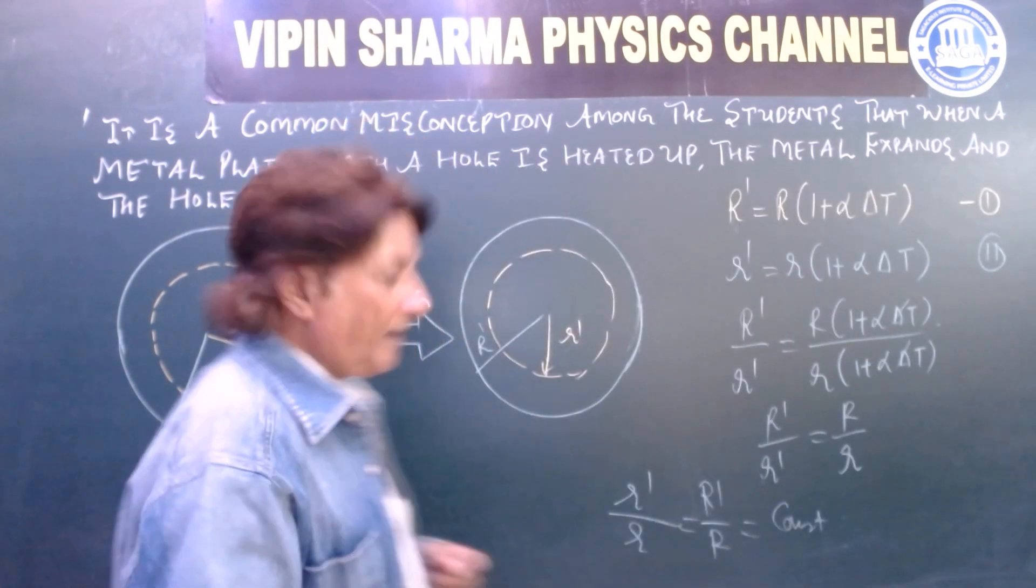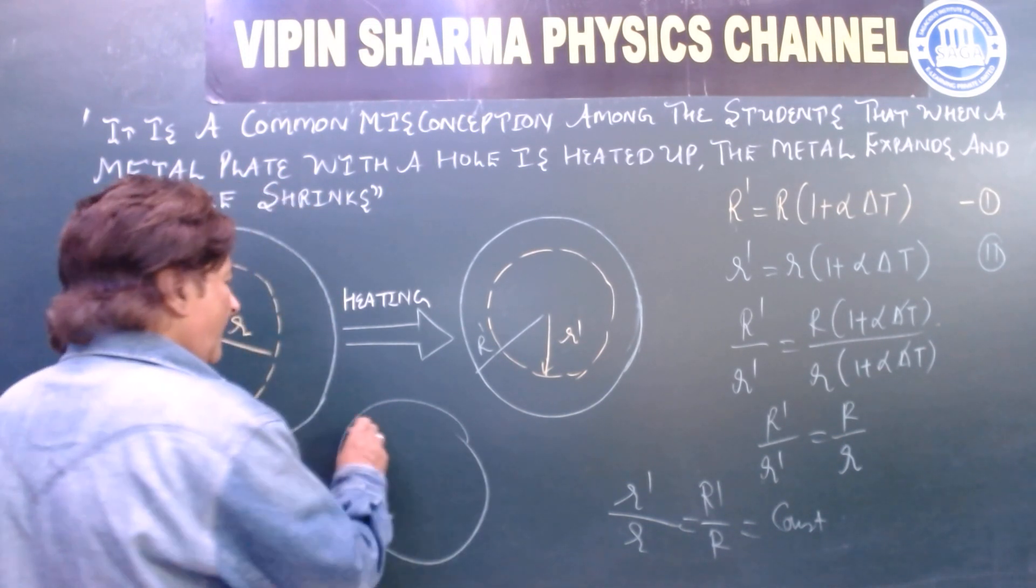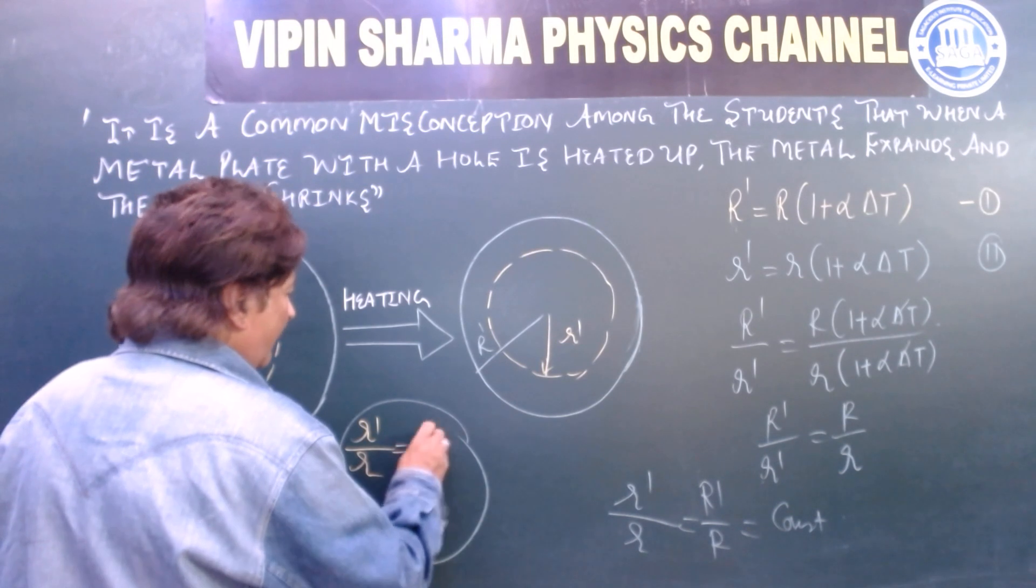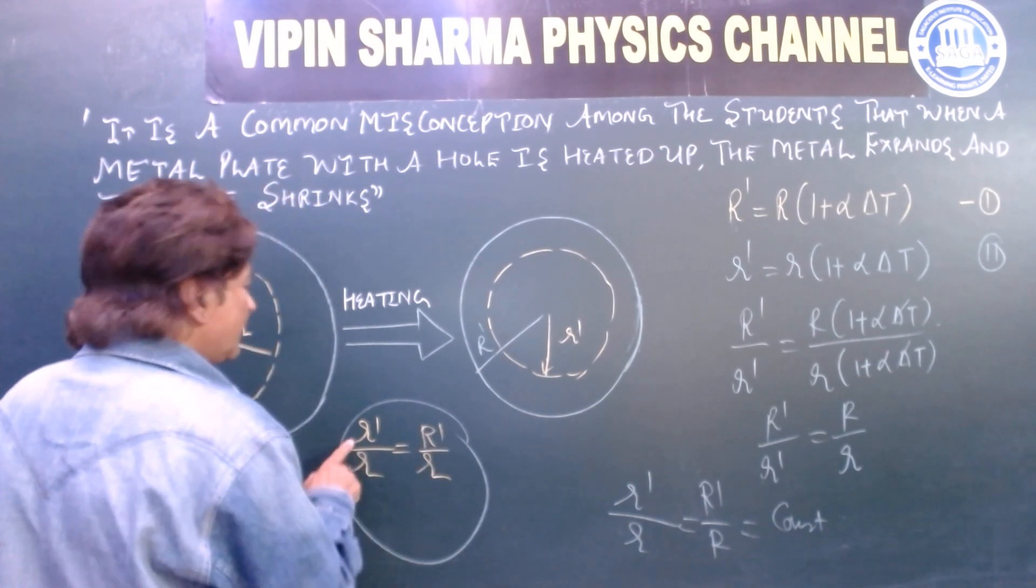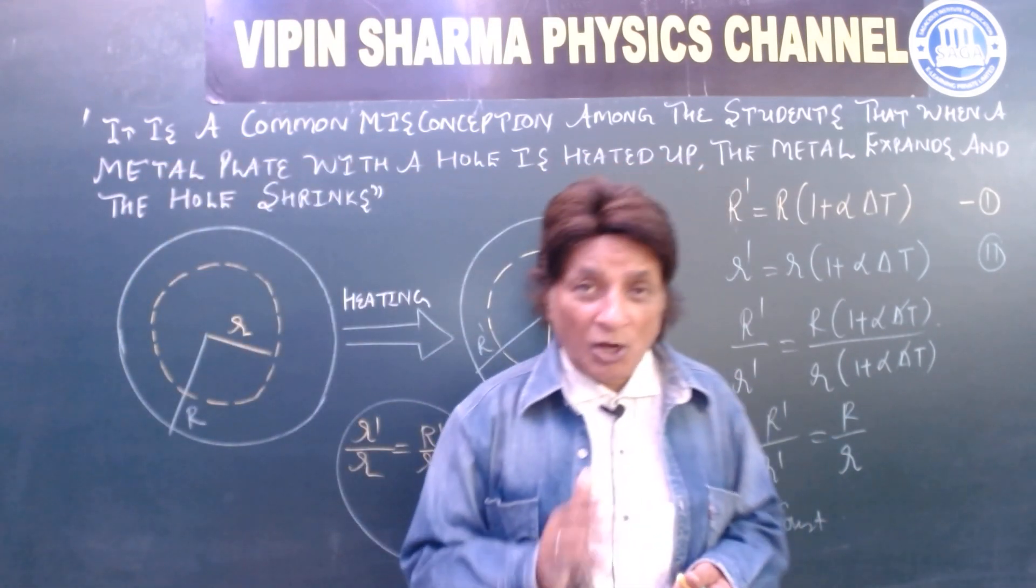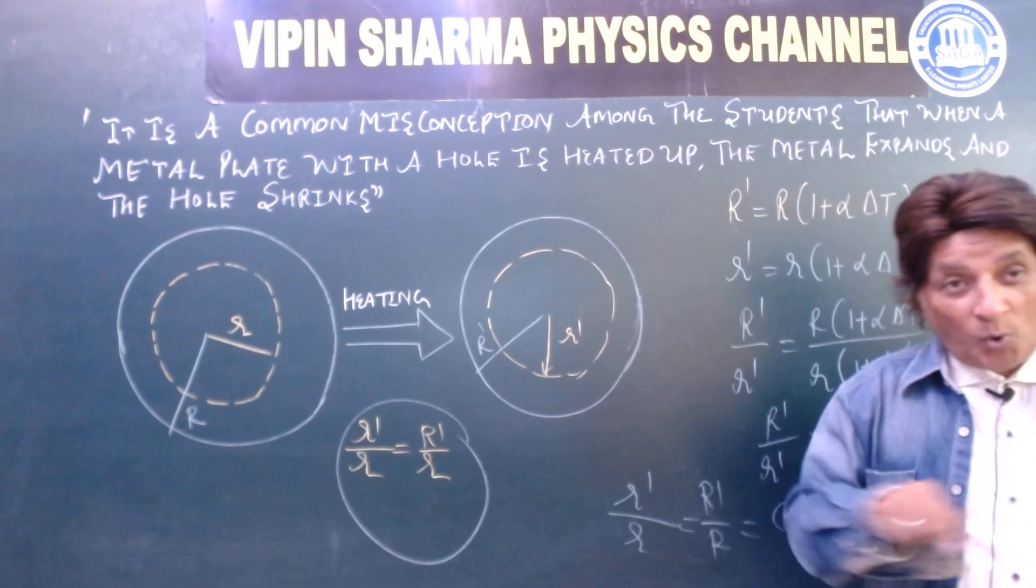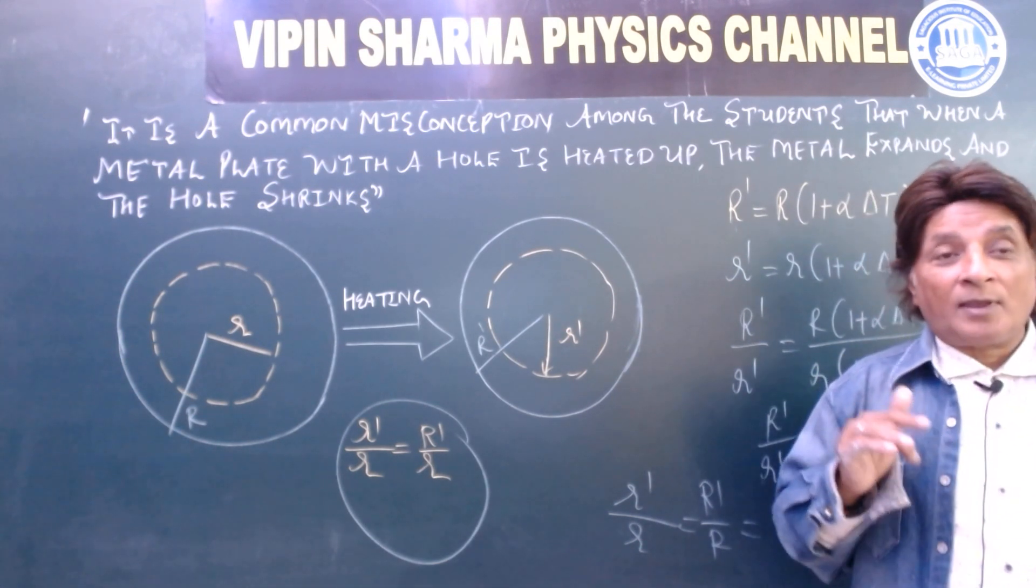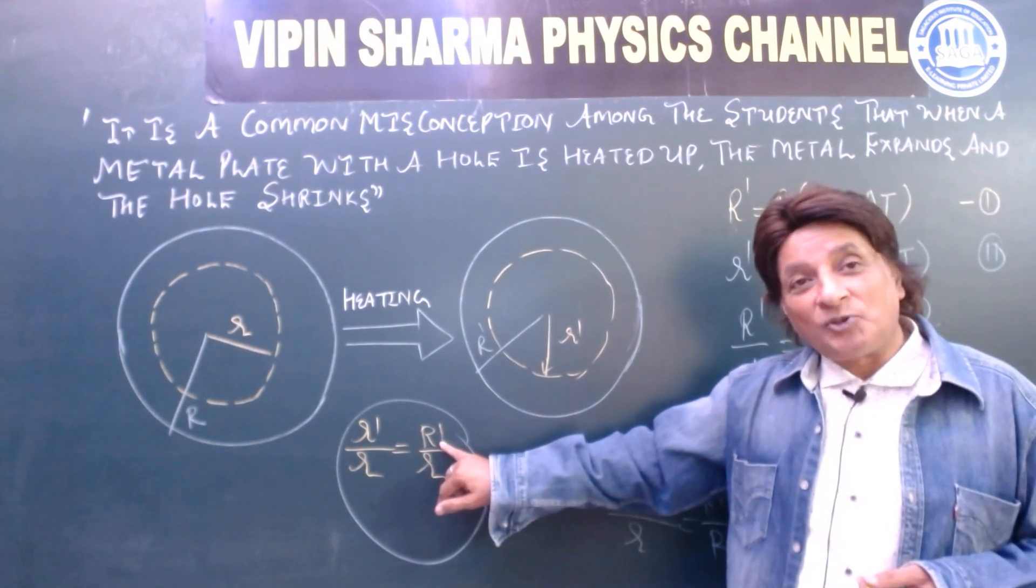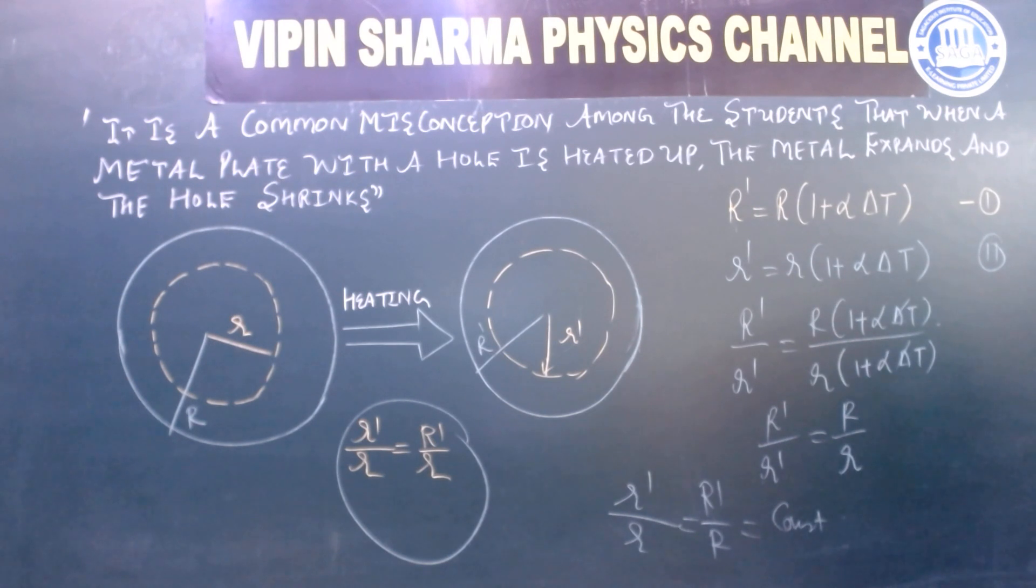This is the main point which has shown that the radius of the inner hole, the expansion in the radius of the hole will be proportional to R dash.